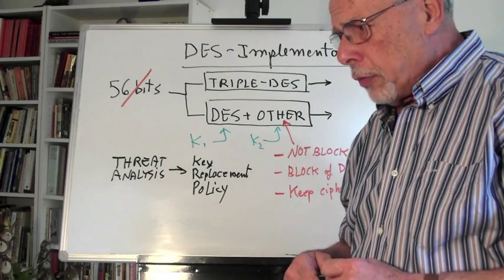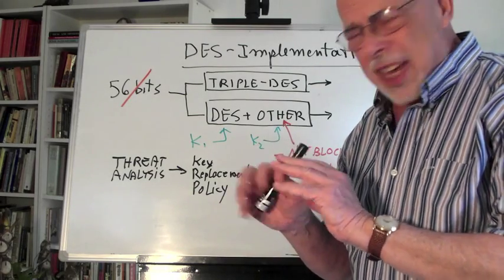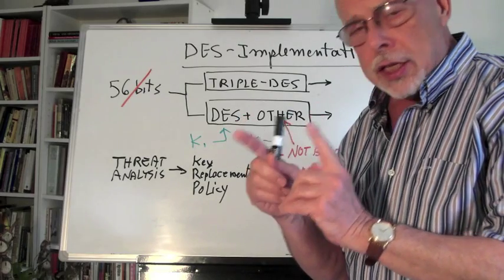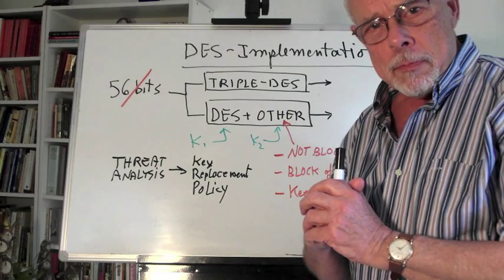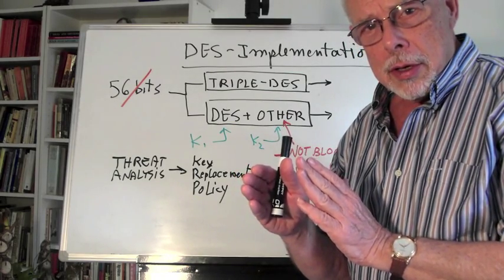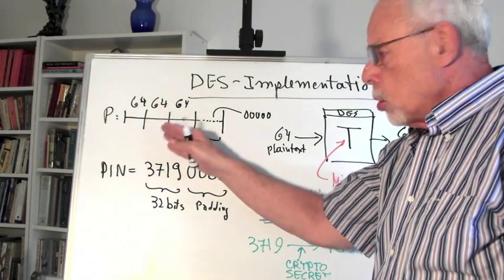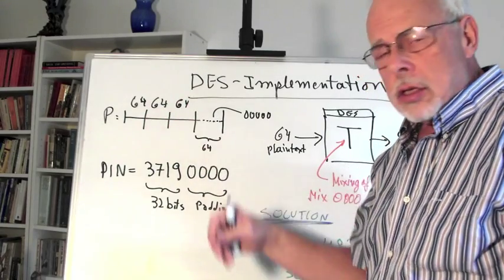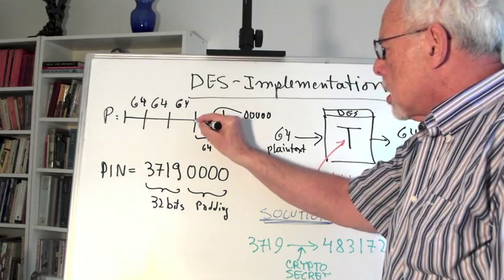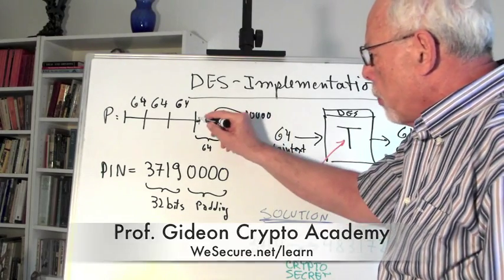Another implementation vulnerability comes from something that nobody pays attention to: what do you do if you don't have a full 64 bits in the plaintext? In that case, often times we pad with zeros. If you use DES and cut plaintext into blocks of 64 bits, what happens if the edge of the plaintext just overflows the last 64-bit block?